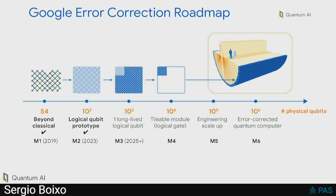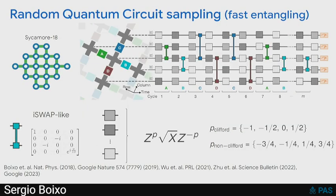There was actually a question about what we mean by a logical qubit. Our definition will be doing around a million cycles of syndrome extraction with a logical error rate per cycle of around 10 to the minus six. That's what we need in our case.